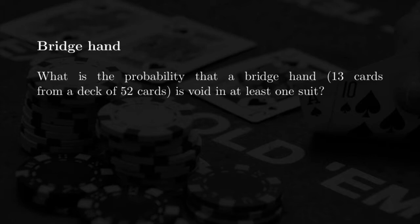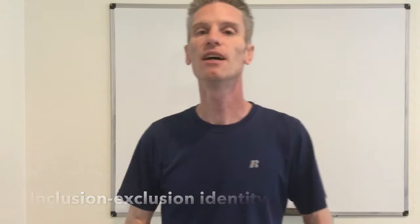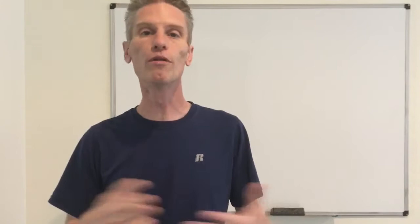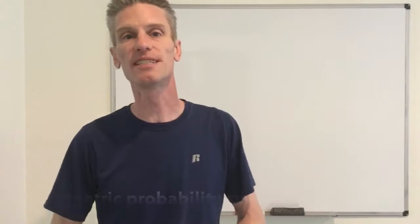A bridge hand consists of 13 cards chosen from an ordinary deck of 52 cards. The deck is exactly the same as in poker — 52 cards consisting of 13 denominations times 4 suits — but contrary to poker we choose 13 cards. To solve this problem we need to use the inclusion-exclusion identity, and like for poker probabilities we assume the deck is well mixed.